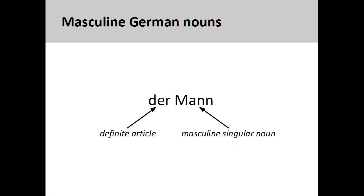The German noun 'Mann,' meaning 'man,' has a masculine grammatical gender, so its definite article is 'der.' In this case, the grammatical gender agrees with the biological gender of the noun. It is also important to note that all German nouns are capitalized.